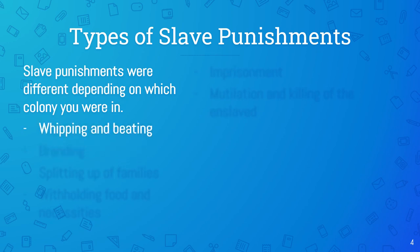First and foremost: whipping and beating. Slaves would have been whipped and beaten if they did not follow the rules or if they tried to rebel in any way — you'd notice in any movie about slavery there's always someone being whipped. There was also branding, where they put a hot iron on the skin. Branding was used as punishment and also to identify who the enslaved person belonged to.